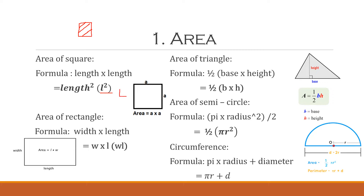For example, if the length is equal to 4, the area will equal 16 cm² since 4 squared is 16. Moving on to the area of a rectangle — the formula is width × length, or WL for short. For example, if the length is equal to 5 and the width is equal to 2, the area will equal 2 × 5 = 10 cm².